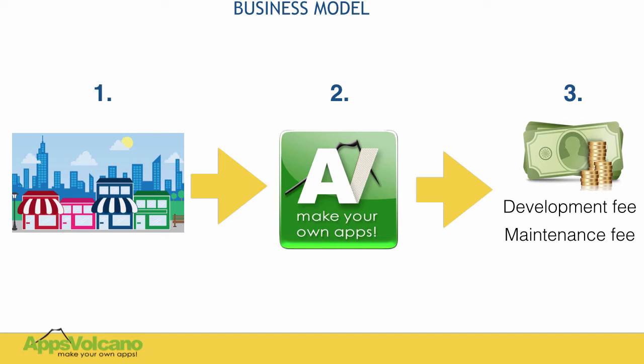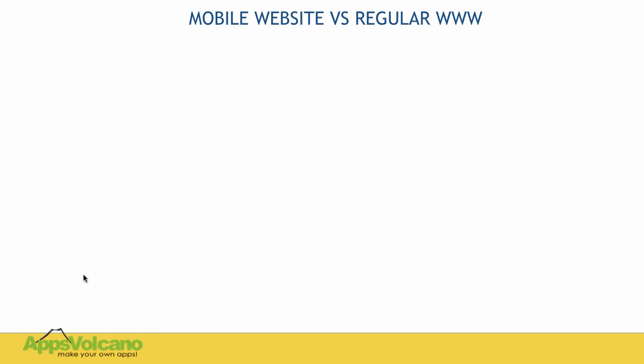The great thing about this business model is that every single step can be easily outsourced. You can outsource lead generation, all the graphics, making the website itself. You can find your own outsource team or simply outsource to AppsVolcano, and everything can work without you being 100% involved.